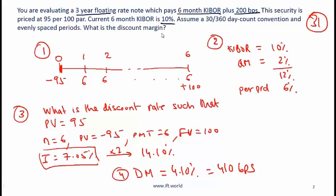What is the discount margin? These are just standard assumptions that we are making for the valuation of floating rate notes. I'll walk you through a straightforward 4-step process to come up with the discount margin. Step 1 is to recognize the timeline and we've already started doing that. At time 0 the price is minus 95 and we have 6 semi-annual periods.